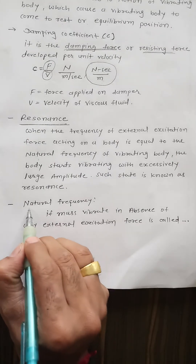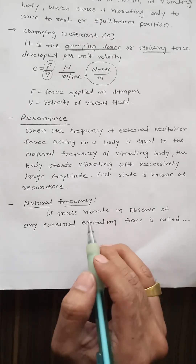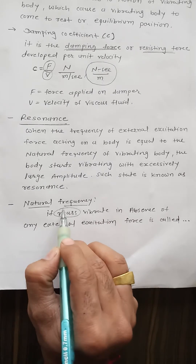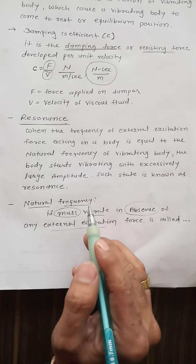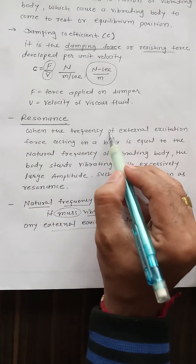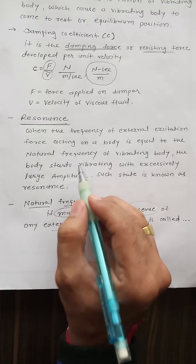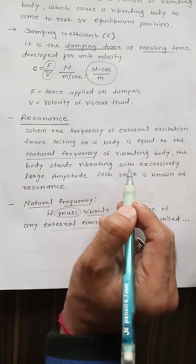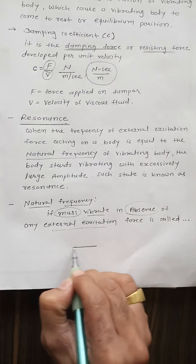Before understanding resonance, you should know natural frequency. Every body has some mass and elasticity. If a mass vibrates in the absence of any external excitation force, that frequency is called the natural frequency. Now, resonance: when the external excitation force applied to the body equals the natural frequency of the vibrating body, the body starts vibrating excessively.